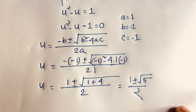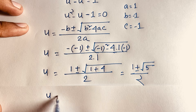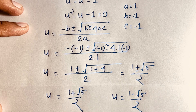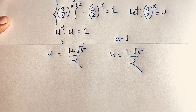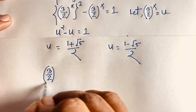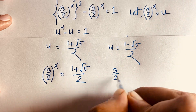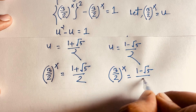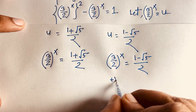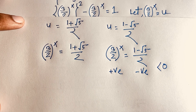So there are two values: u equals (1 + √5)/2 and u equals (1 − √5)/2. Recalling that u equals (3/2)^x, which is always positive, we must reject the second value since (1 − √5)/2 is negative. So we keep only u equals (1 + √5)/2.